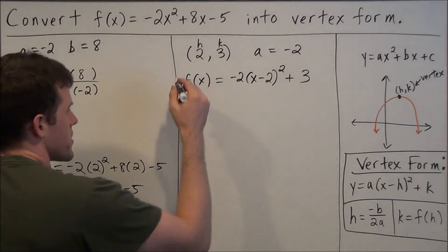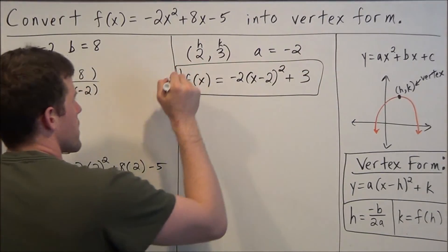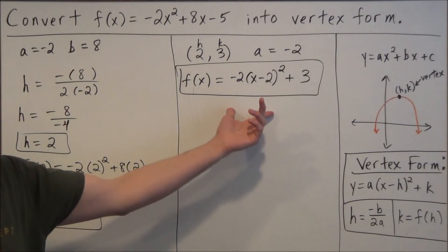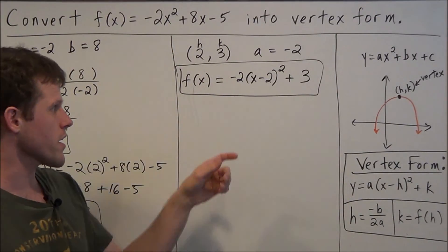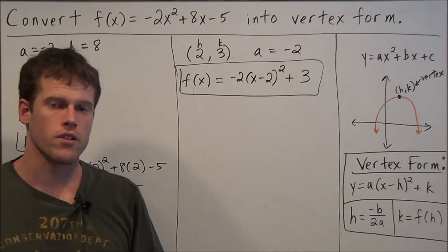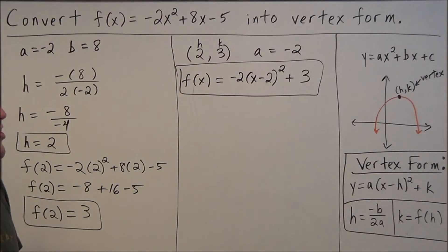And this represents our quadratic equation in vertex form. Now I would advise checking that this matches what you have here. So if you have a graphing calculator, you should graph both of these and see that the graphs overlap one another. Otherwise you could check this algebraically, which I'll show right here.